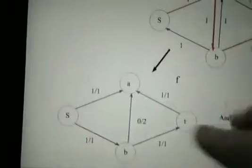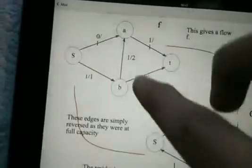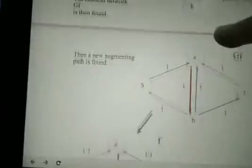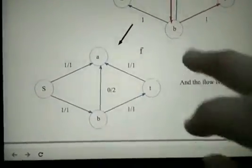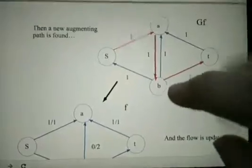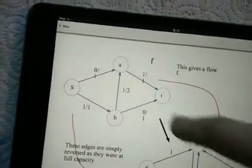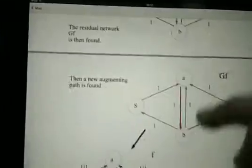This edge now has flow of zero as we have pushed back 1 in the opposite direction to what we originally did. So it's 1 minus 1.